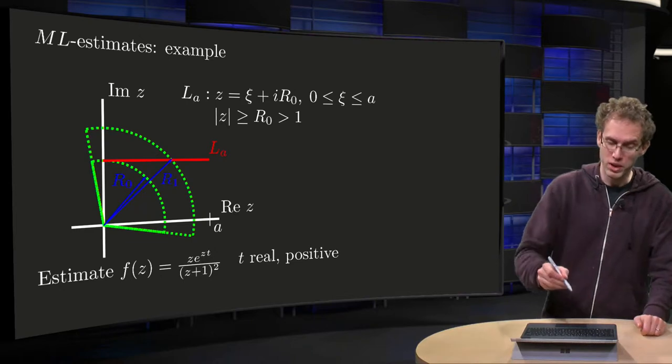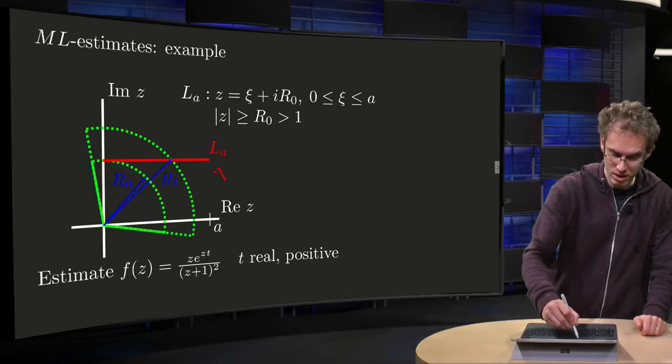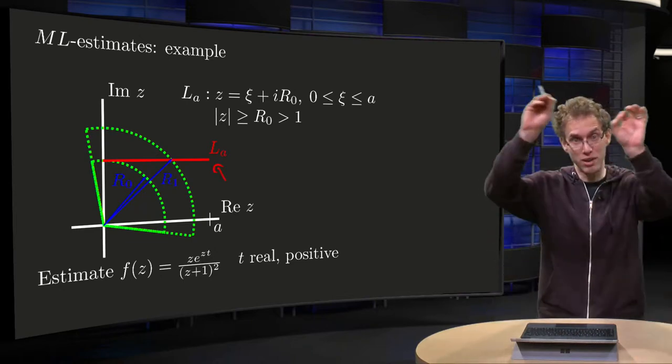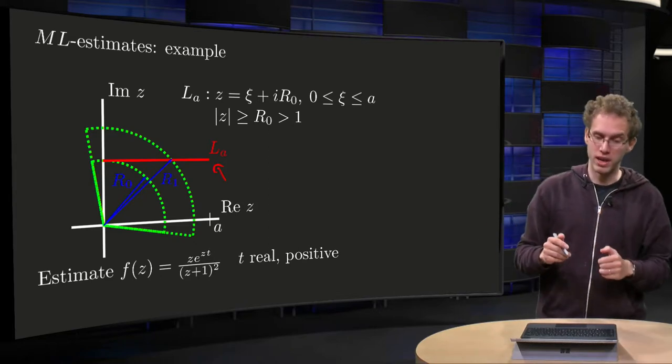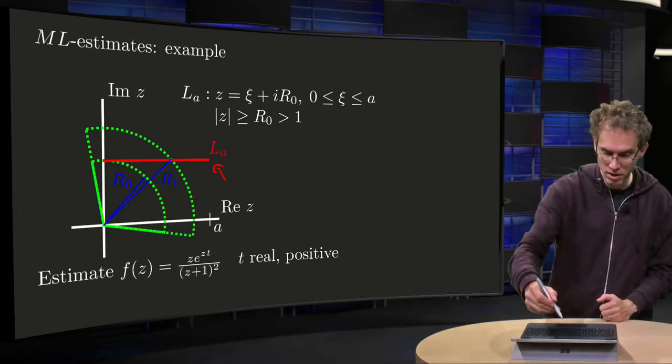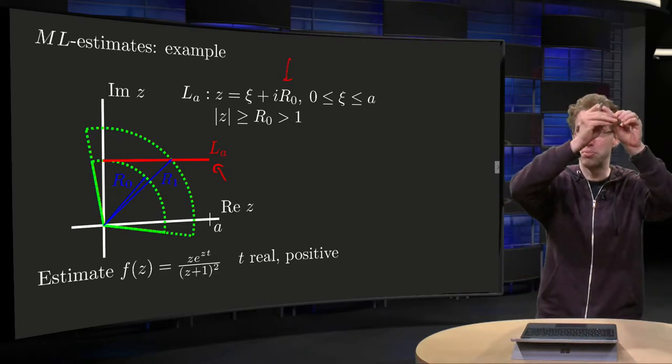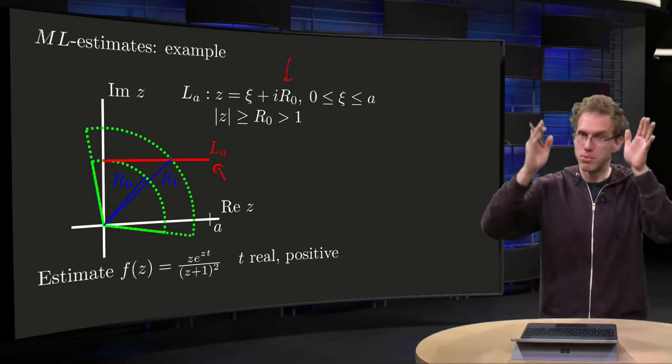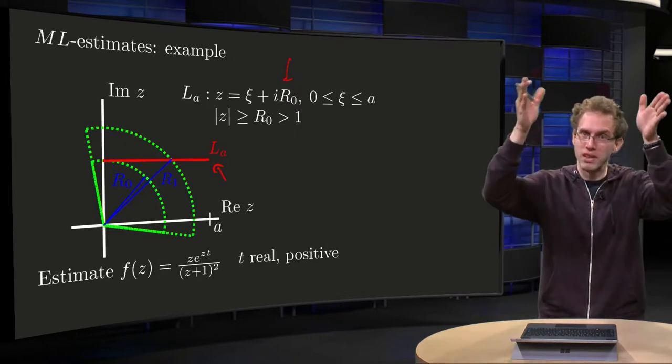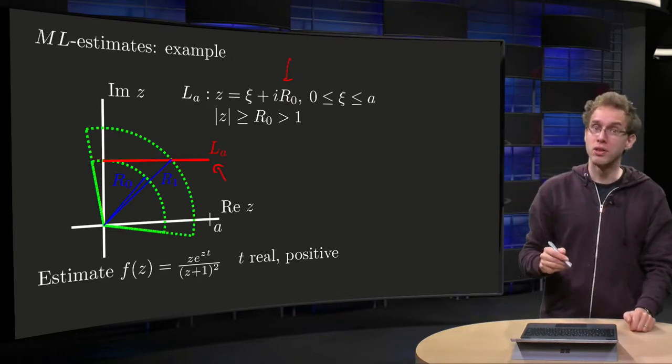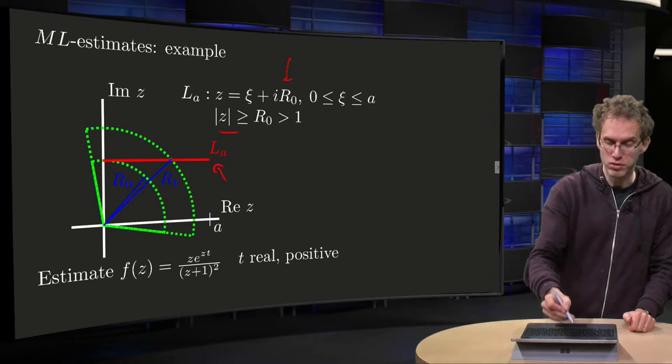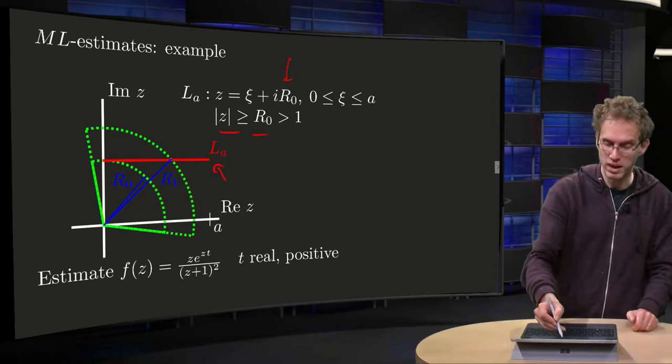So we want to estimate an integral along LA, a line over here, where LA is at some height R0 and where the x goes between 0 and A, but finite, so we have some line segment over here. We know that the modulus of z is bigger or equal than R0, and we will take R0 to be bigger than 1.